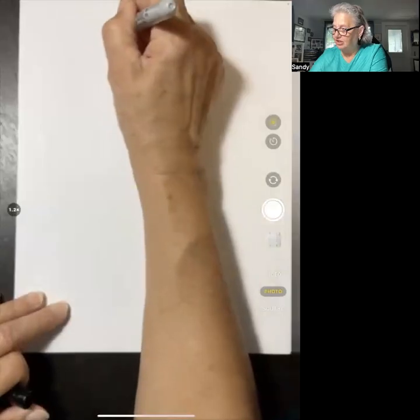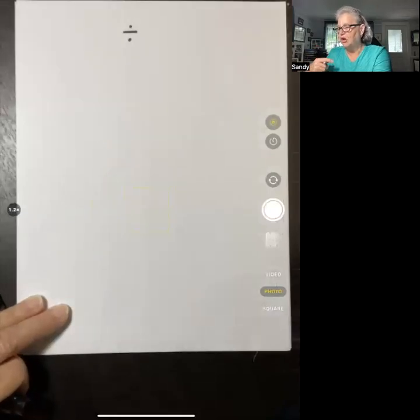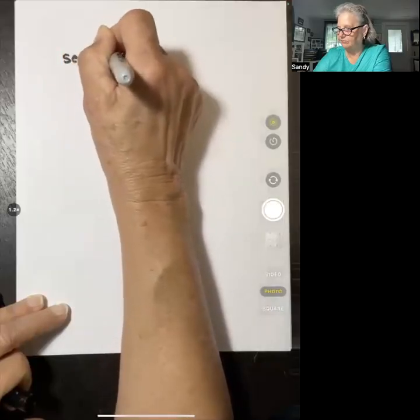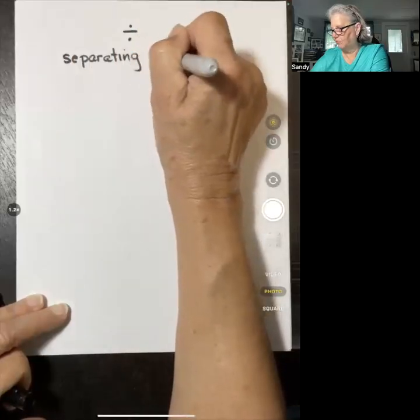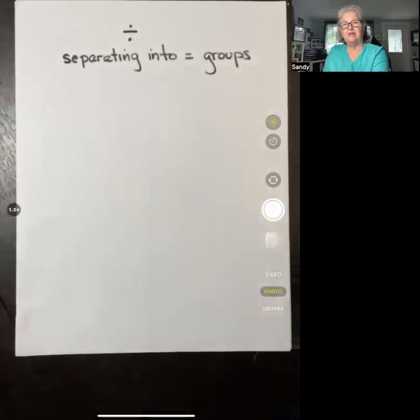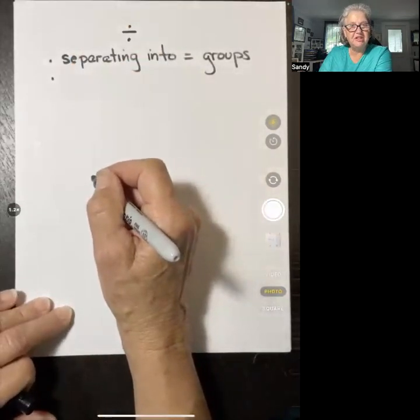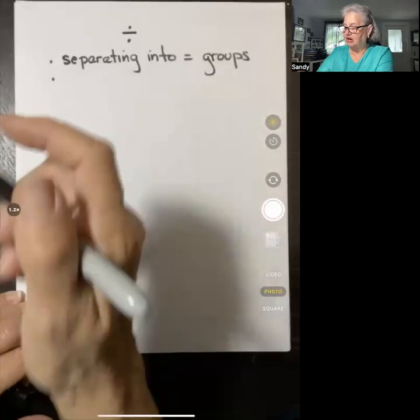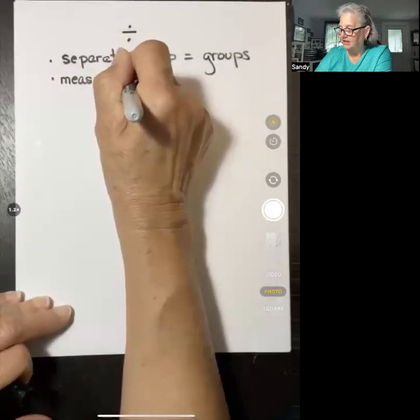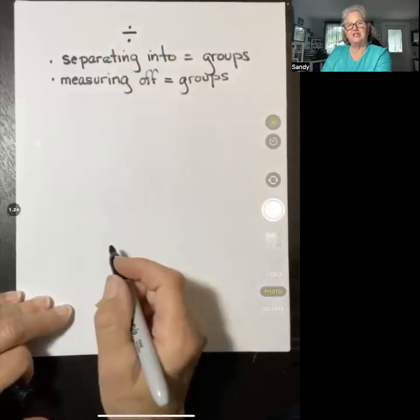Part of what we want to think about with division are two of the models for division. One model is about separating into equal groups. Partitive division we talk about, separating into equal groups. The other that we're going to be using is sometimes called quotative division, a measurement division. It's pulling off equal groups. It's measuring off equal groups.